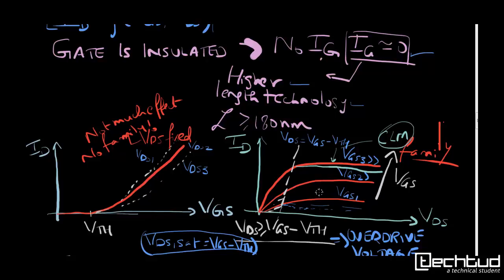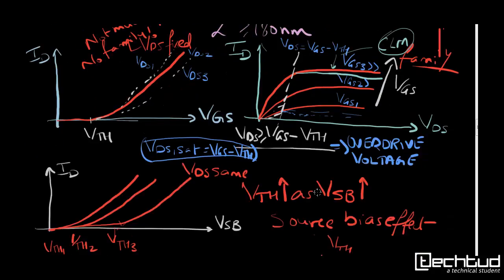Similarly, if you see family of curves for ID vs VSB, threshold voltage will change. So you can see that VTH1, VTH2, VTH3—three different threshold voltages for VSB change. If we are varying, we are plotting ID vs VSB and VGS and VDS are fixed for particular technology, then we will see that VTH1 will be having like this. As VSB will increase, threshold voltage will increase. So cutoff region will extend. This is the source bias effect.